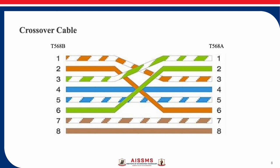In the crossover cable configuration, one end uses standard B and the other uses standard A. Pin 1 is connected to pin 3 on the other side, pin 3 is connected to pin 1 on the other side, and pin 6 is connected to pin 2. The other pins are straight. Not all pins are straight like in the straight-through cable — there are cross connections between both sides, which is why it is called a crossover cable.